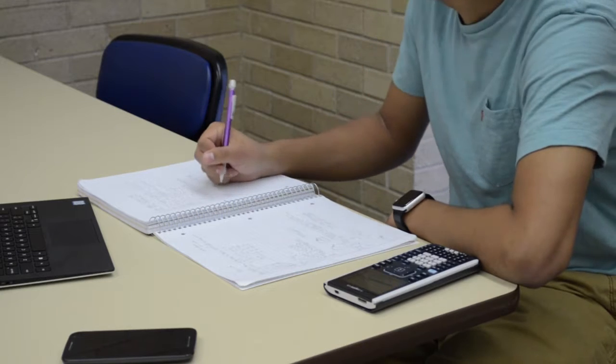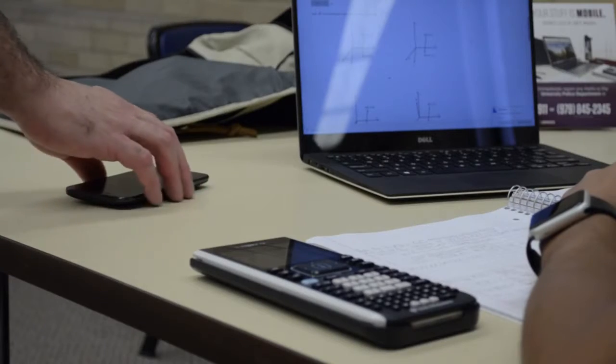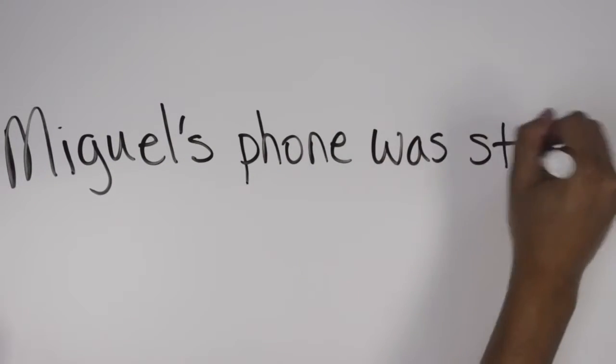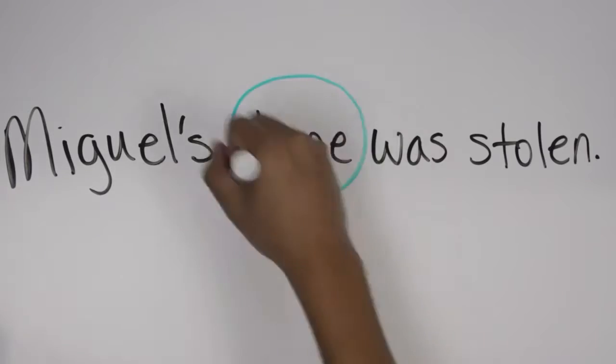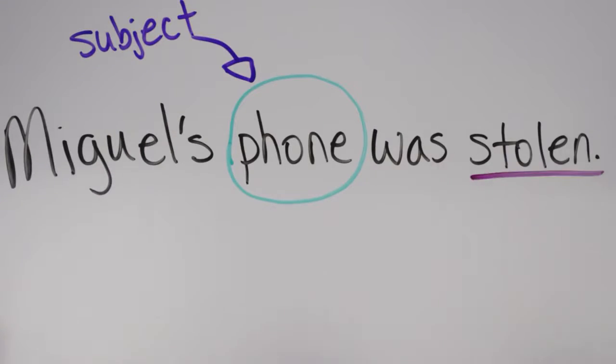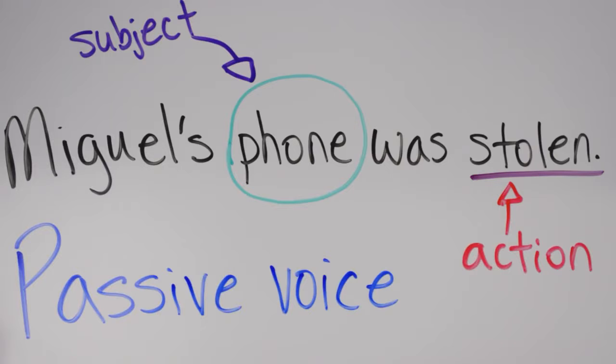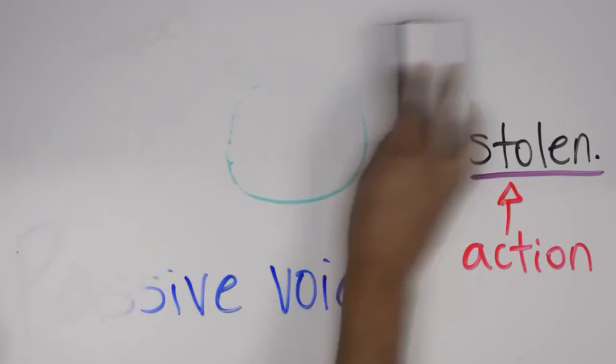For instance, Miguel's phone was stolen. If the actor performing the action is irrelevant or unknown, you can use passive voice to put emphasis on the thing acted upon. We don't know who committed the action, so we use passive voice to either leave the actor for the end of the sentence or leave it out of the sentence completely.